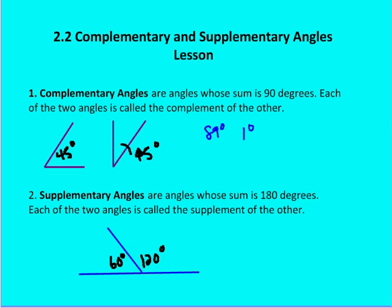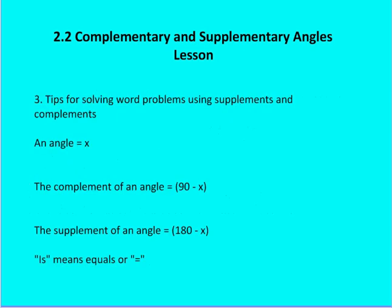Let's talk about how to solve word problems using complementary and supplementary angles. First, identify the angle in question as x — that's your variable. When you hear 'the complement of an angle,' that equals 90 minus x. The supplement of an angle equals 180 minus x. And 'is' generally means equals, so you'll use the equal sign.